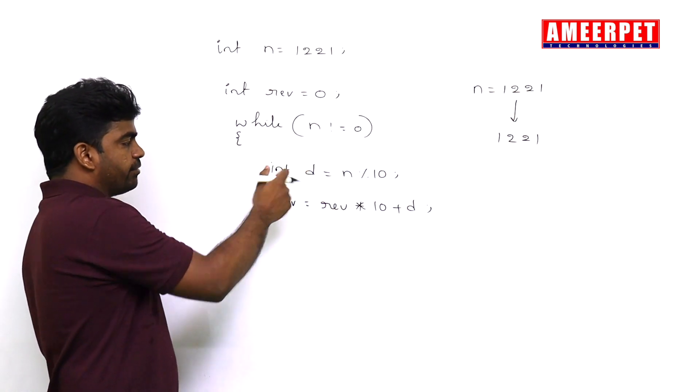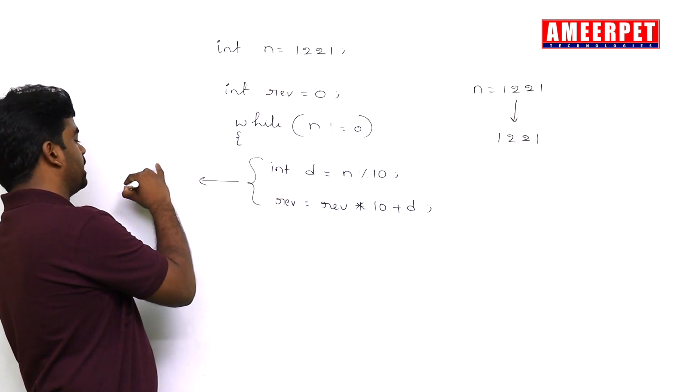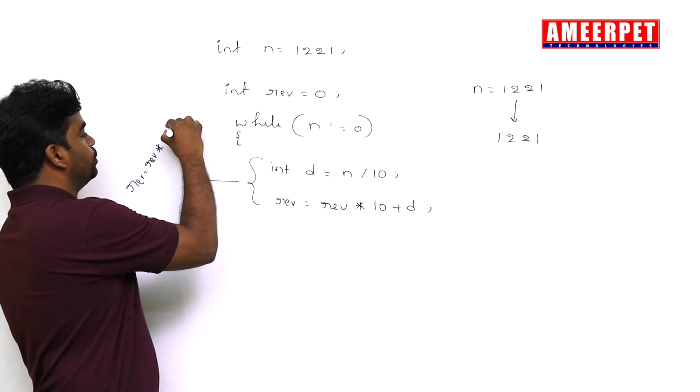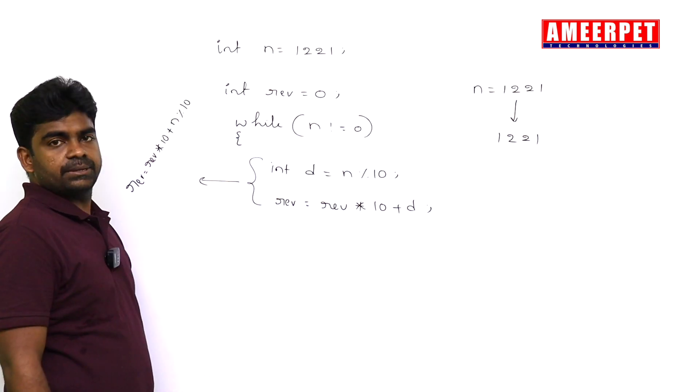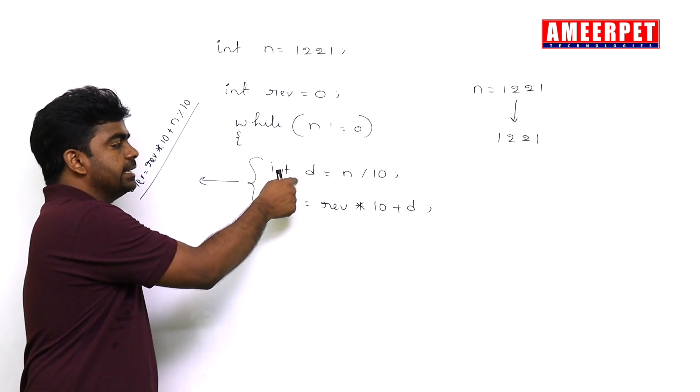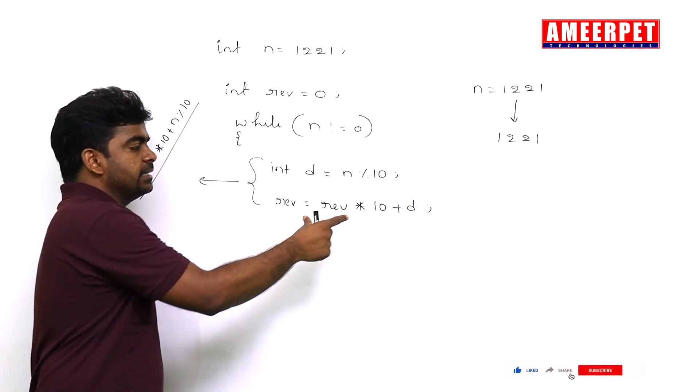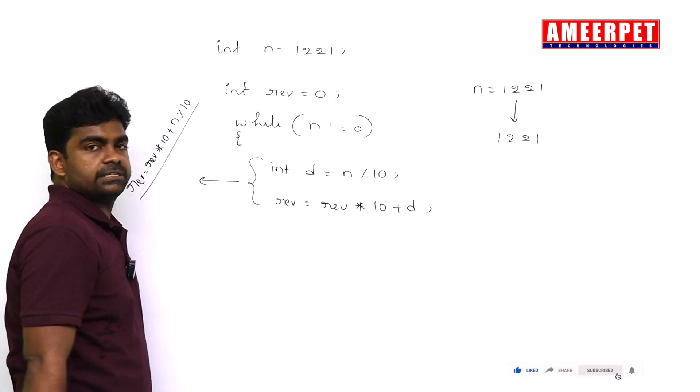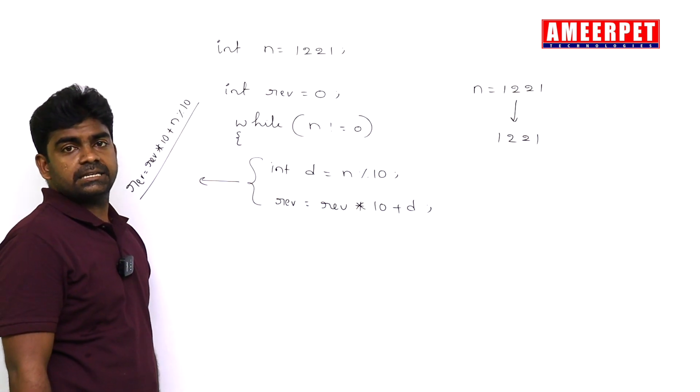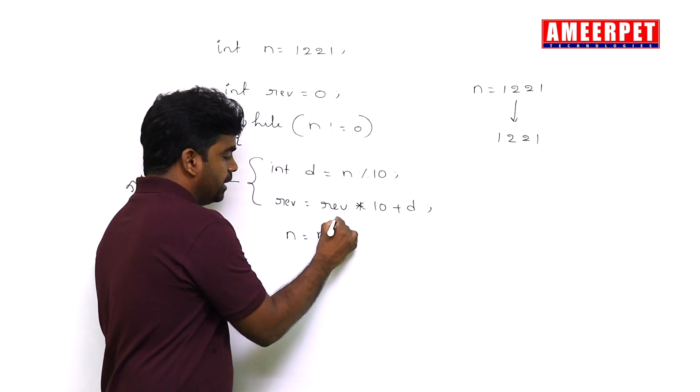Instead of writing two lines of code, can I write it in one line? Yes, you can write like this: reverse equals reverse into 10 plus n mod 10. It's a simple way of writing single line, but I am writing two lines of code elaborately. First we are collecting the digit by performing mod operation with 10. Then reverse - we perform the mod operation with 10 plus adding that digit.